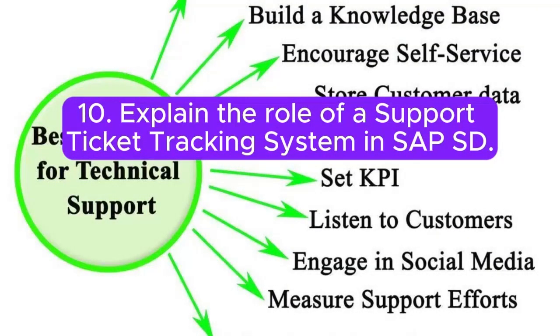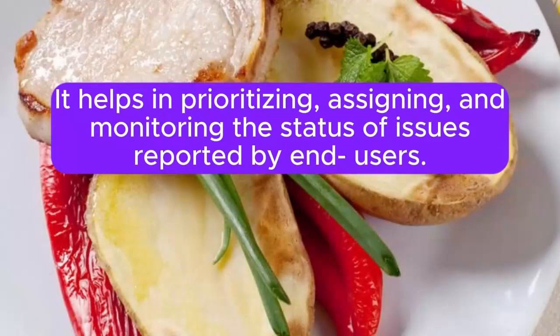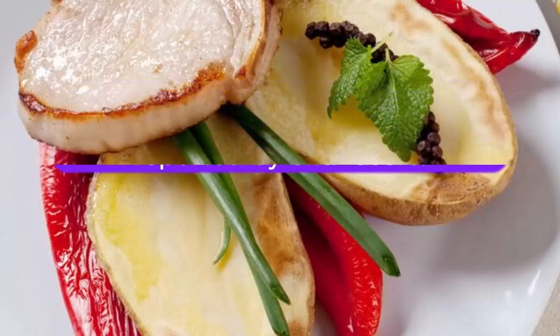Question 10: Explain the role of a support ticket tracking system in SAP SD. Answer: A support ticket tracking system records and tracks the progress of support tickets. It helps in prioritizing, assigning, and monitoring the status of issues reported by end users.